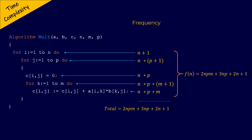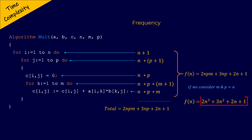Generally, when we have more than one parameter in a polynomial — in this function we have N, M, and P — we reduce the analysis to just one parameter by assuming M and P are equal to N. By replacing M as N and P as N, we have the function 2N cubed plus 3N squared plus 2N plus 1, which is a cubic polynomial since the degree of the leading term is N to the power 3. Therefore, the time complexity for this algorithm using three nested for loops is cubic.